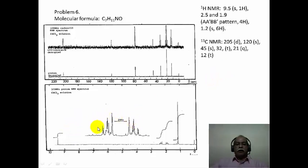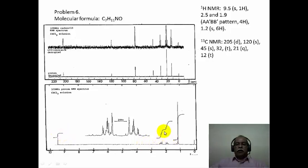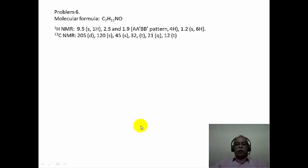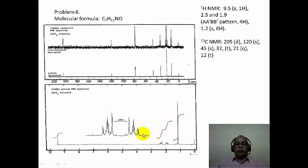The approximate chemical shifts of 2.5 ppm and 1.9 ppm are the centers of the multiplets seen, corresponding to an AA'BB' pattern of 4 hydrogen intensity. One hydrogen corresponds to the aldehyde singlet. This part of the multiplet corresponds to 2 hydrogen intensity for the BB' side of the AA'BB' pattern, and on the other side, the AA' pattern corresponds to another 2 hydrogen intensity — totally 4 hydrogen intensity, confirming a 4-spin system.